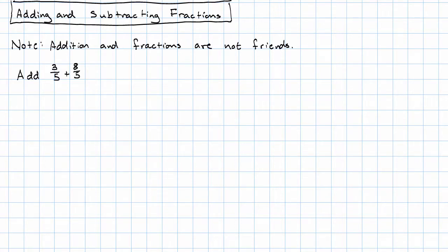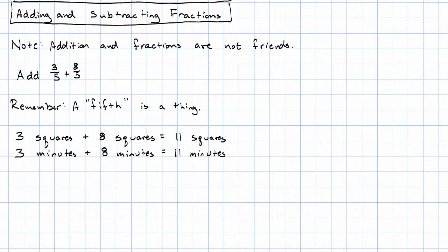Let's suppose we want to add 3 fifths plus 8 fifths. Well, that's actually pretty easy. Why? Remember what a fifth is. A fifth is a thing. So just in the same way that 3 squares plus 8 squares is 11 squares, or 3 minutes plus 8 minutes is 11 minutes, well, we see that 3 fifths plus 8 fifths is 11 fifths.